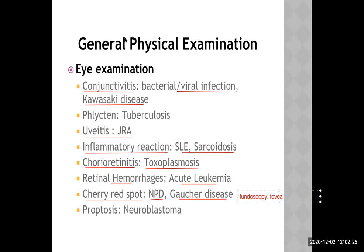Proptosis (also called exophthalmos) — protrusion of the eyeball — along with lymphadenopathy commonly occurs in neuroblastoma, because it frequently metastasizes behind the eyeball into the orbit, pushing the eyeball forward. This concludes the examination section; after this we move to investigations. Although this clinical discussion may seem complex now, these are the tools that will help you diagnose cases when you start working as a doctor.